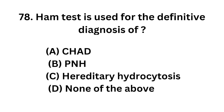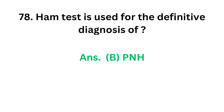Question 78. Ham test is used for the definitive diagnosis of: Option A: CHAD, or cold hemagglutinin disease. Option B: PNH, or paroxysmal nocturnal hemoglobinuria. Option C: Hereditary hydrocytosis. Option D: None of the above. The correct answer is Option B. Ham test is used for the definitive diagnosis of paroxysmal nocturnal hemoglobinuria (PNH).